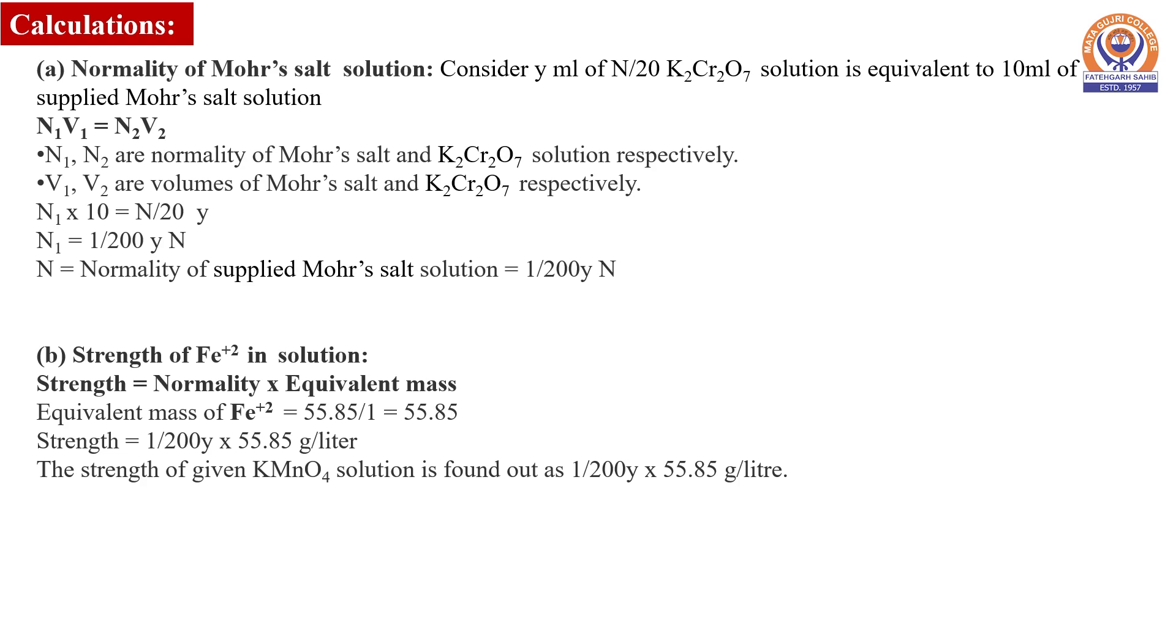Now the calculations part. First of all, we will be determining the normality of Mohr salt solution, which is calculated by using the normality equation N₁V₁ = N₂V₂. N₁ is the normality of Mohr salt, N₂ is the normality of potassium dichromate solution. V₁ and V₂ are the volumes of Mohr salt and potassium dichromate solutions used respectively. Using the normality equation, we can find out the normality of the Mohr salt solution.